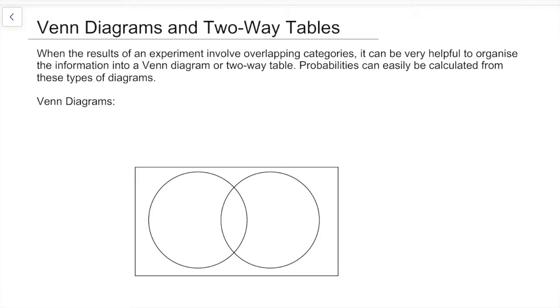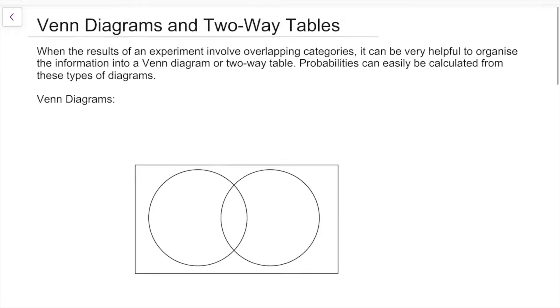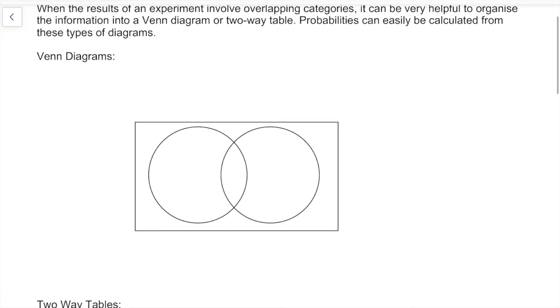So here we have a Venn diagram. This is a basic Venn diagram. You'll have your circles that have some of your data in it. They tend to overlap and then you have your rectangle around them that contains all of the data in it.